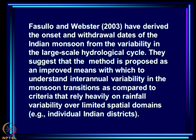Fasula and Webster derived onset and withdrawal dates of the Indian monsoon from variability in the large-scale hydrological cycle. They suggest this is an improved means for understanding interannual variability in monsoon transitions, compared to criteria relying heavily on rainfall variability over limited spatial domains such as individual Indian districts. They consider that Ananthakrishnan and Somand's criteria identify onset only over limited regions.